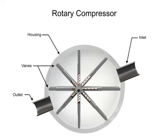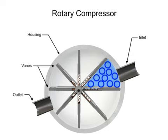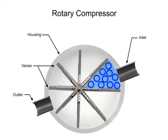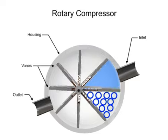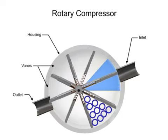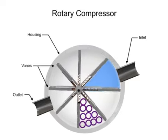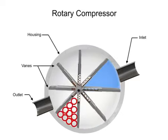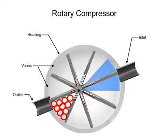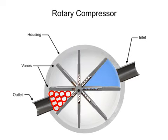Air enters at the largest chamber. As the vanes rotate, they retract, causing the chamber to get smaller and compress the air. Air exits at the smallest chamber.